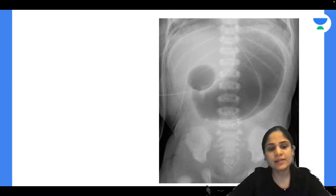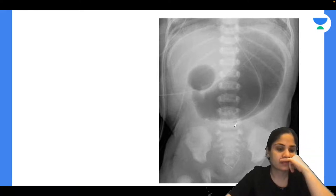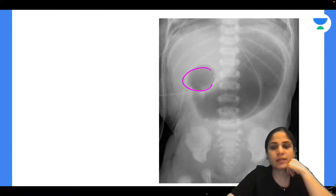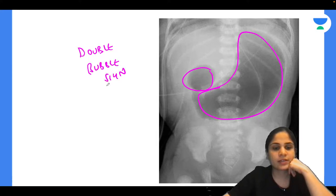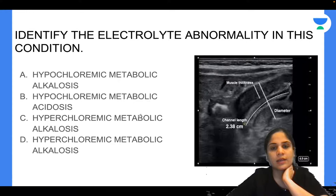Identify the sign: this is a double bubble sign — two bubbles visible. Double bubble sign is seen in duodenal atresia. Single bubble sign is seen in congenital hypertrophic pyloric stenosis (CHPS).